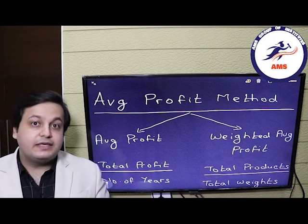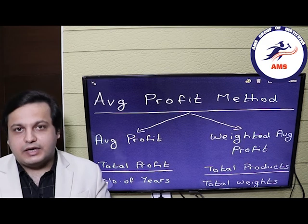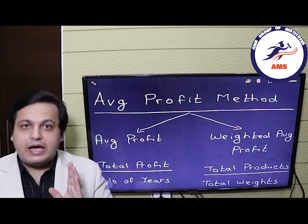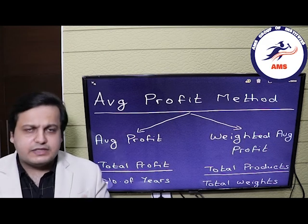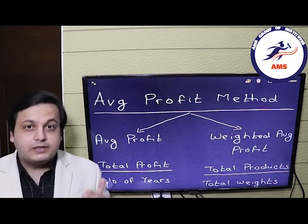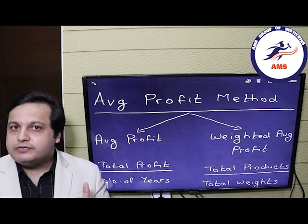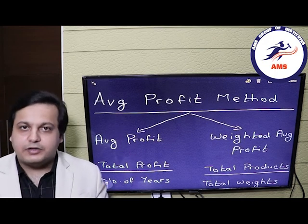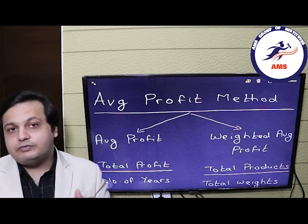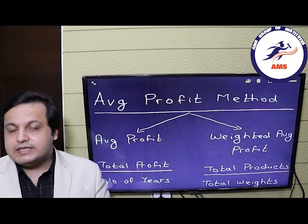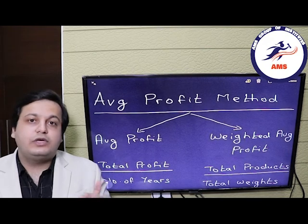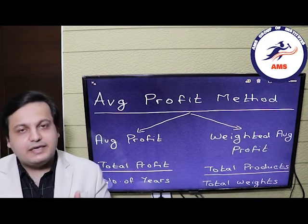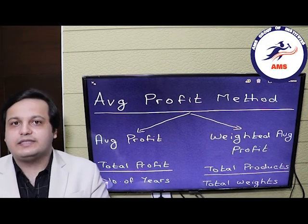Let's first look at the formulas. The formula for average profits is simple: total of the profits divided by the number of years. The formula for weighted average is: total of the products divided by the total of the weights.